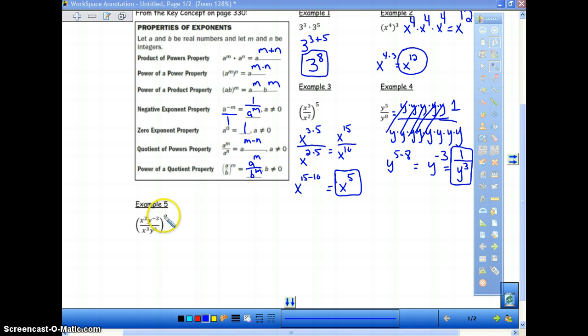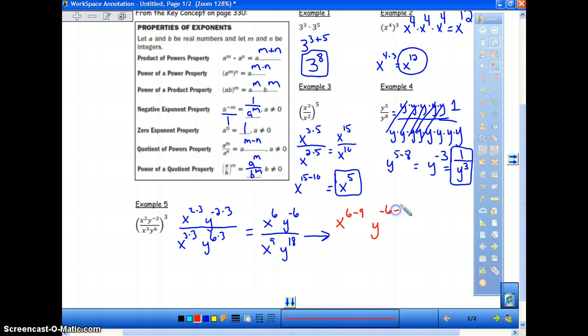So, again, anything on the outside of a parenthesis, we always apply to the inside. So I'm going to do that first. You may have done it in a different order, but that's okay. So we have x squared times 3, we have y to the negative 2 times 3 on top, and on the bottom, we have x to the 3rd times 3, and we have y to the 6th times 3. So this ends up being x to the 6th, y to the negative 6th, then we have x to the 9th, and y to the 18th. Now we can use our quotient property. So we have x to the 6th minus 9, that's our quotient, and we have y to the negative 6th minus 18th.